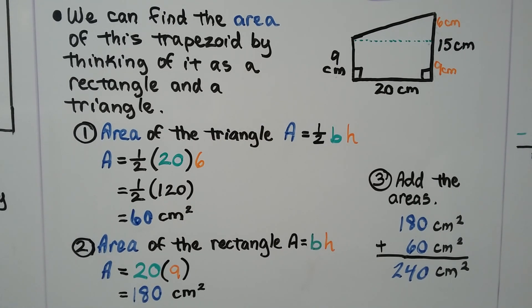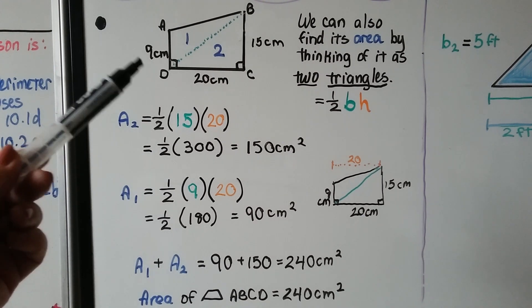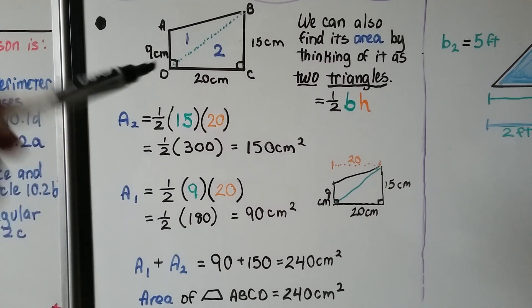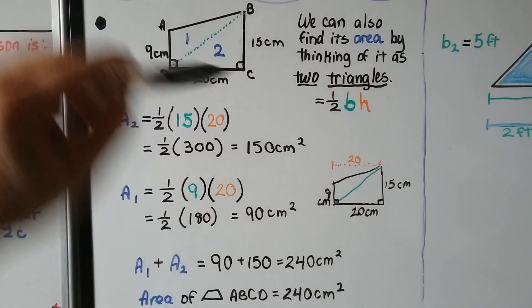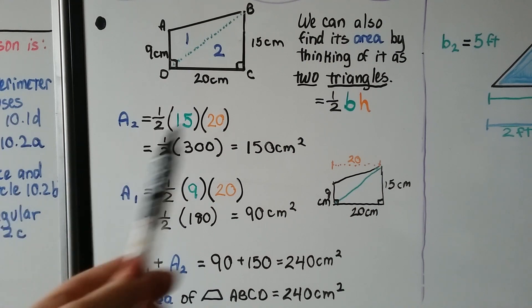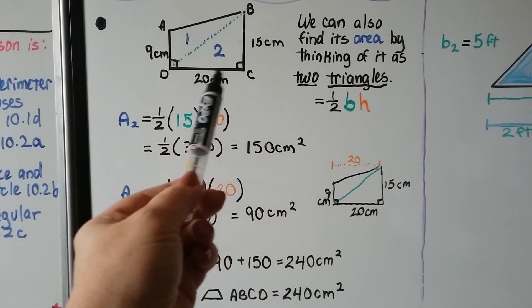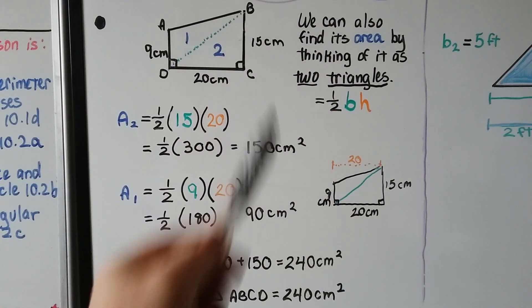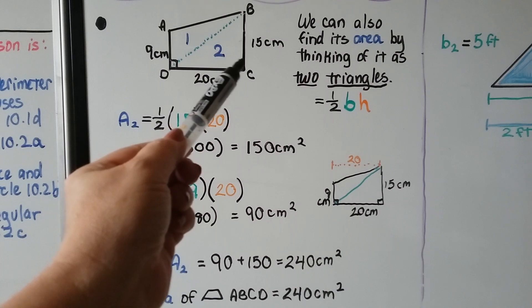We can also do it as two triangles. So finding the area of this using two triangles, we can put a line coming down this way. We also could have gone this way, but I used this way, which means now I have a leg of a triangle that's 9 centimeters. And for this triangle number 2, I've got a leg that's 20 centimeters and 15 centimeters.